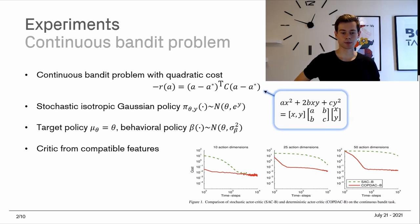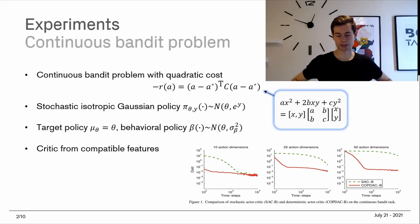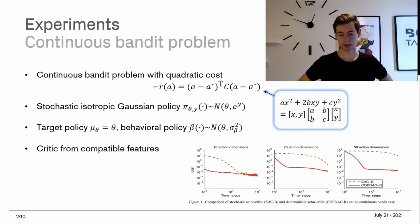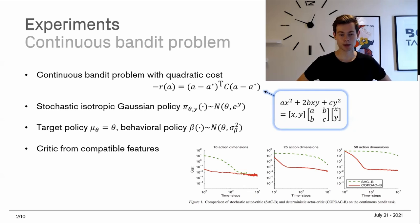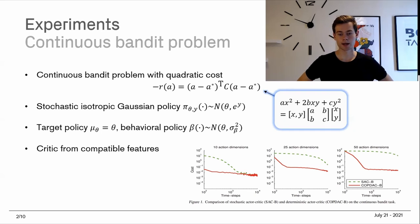For this particular problem, the cost function was quadratic — we can see the form of it in the middle up here, and we can expand that expression to see that it's a quadratic form. We basically have the matrix multiplication indicated in the blue box there. So that's the cost function, and we want to minimize the cost. For the stochastic policy, we're using a Gaussian isotropic policy, which has a mean parameter theta and also a variance parameter, so that even though we've trained this policy, we have some variance internal to it so that we don't always pick the same action.